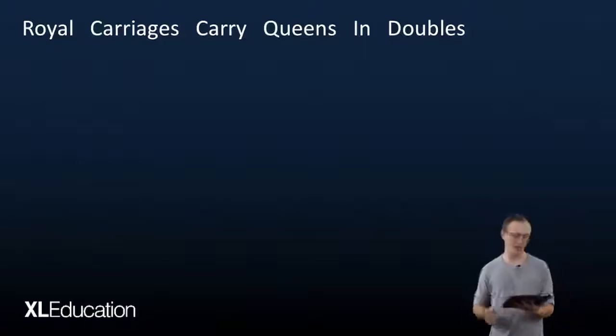So the first one there, or actually the whole thing, is royal carriages carry queens in doubles.